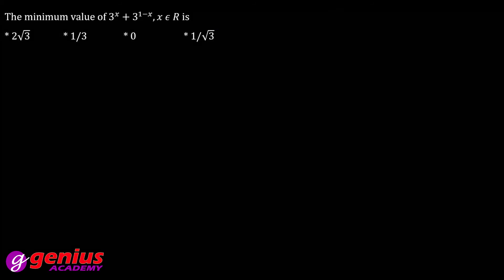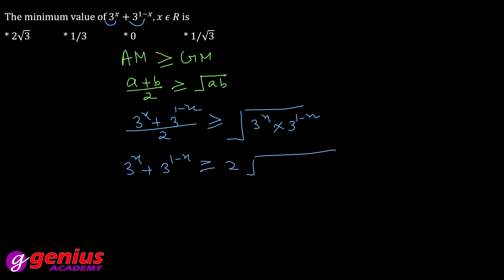Next, you have to find the minimum value of this equation where x belongs to R. We know that arithmetic mean is greater than or equal to geometric mean. That is, A plus B divide by 2 greater than equal to root AB. We put values: 3 to the power x plus 3 to the power 1 minus x over 2 greater than equal to root of 3x times 3 to the 1 minus x. This gives 3x plus 3 to 1 minus x greater than equal to 2 root 3. Minimum value is 2 root 3.